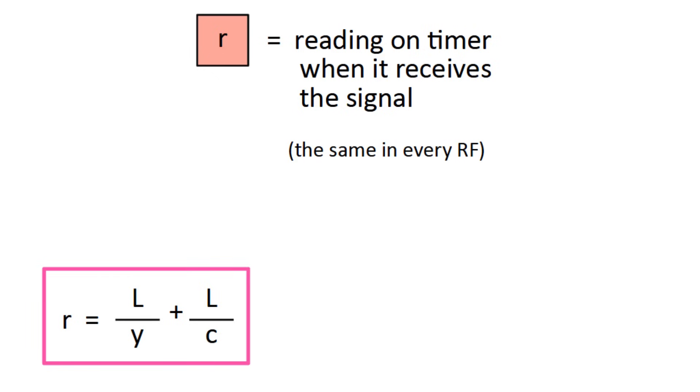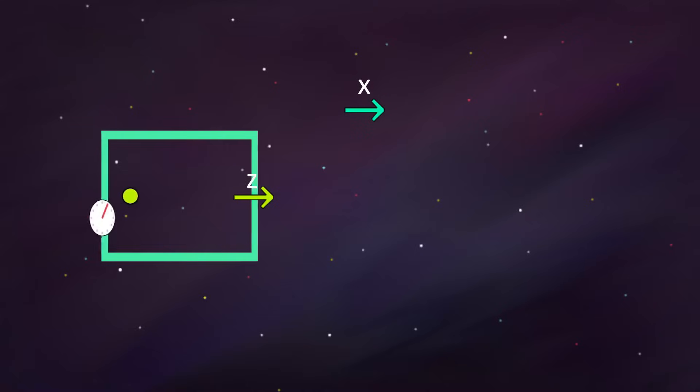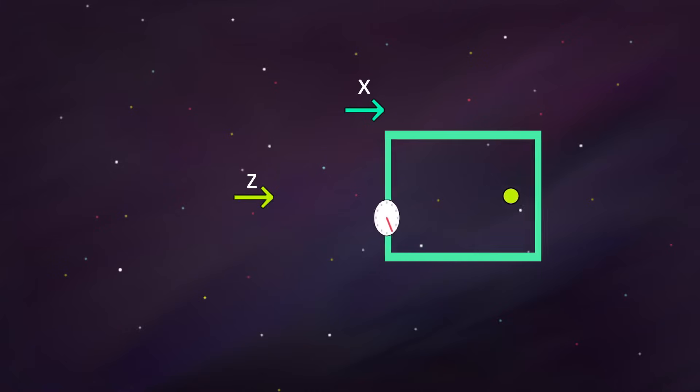This was in the timer's own reference frame, but the reading on the timer the moment it receives the signal should be the same in all reference frames because those events happen in the same place. So we can calculate it in a different reference frame and then set that equal to what we got before. This time, consider the reference frame in which the box is moving to the right at velocity x. The signal still travels at c due to invariance of c, but the projectile now goes on velocity z, which is a combination of x and y. We're ultimately trying to find z in terms of x and y, but for now, we have to find when the timer receives the signal.